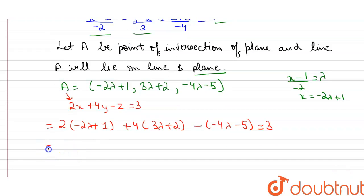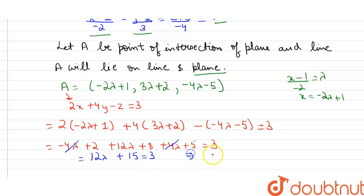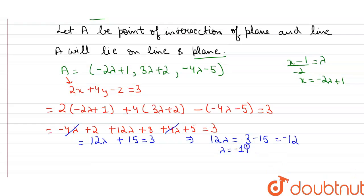Solving this, we get -4λ + 2 + 12λ + 8 + 4λ + 5 = 3. The -4λ and +4λ cancel, so we have 12λ + 2 + 8 + 5 = 3, which gives 12λ + 15 = 3. Therefore, 12λ = 3 - 15 = -12, so lambda = -1.